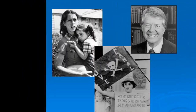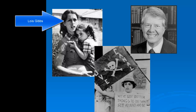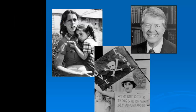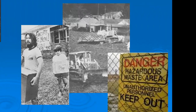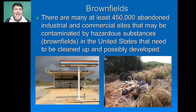Homeowners, led by Lois Gibbs, whose son had been exposed to chemicals, rose up and asked the government for help. In August of 1978, President Jimmy Carter announced a federal health emergency and used federal funds for the first time to try to remedy the situation. Eventually, over 800 people were relocated, and CERCLA was passed, which had a retroactive liability component making Hooker Chemical — now a subsidiary of Occidental Petroleum — liable for cleanup. There are many other brownfields, abandoned industrial and commercial sites contaminated by hazardous substances, that are covered by CERCLA and left to be cleaned up and potentially redeveloped.